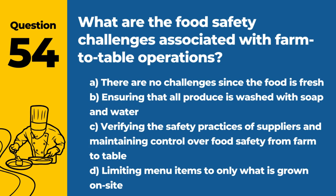Question 54. What are the food safety challenges associated with farm-to-table operations? The answer is C: Verifying the safety practices of suppliers and maintaining control over food safety from farm to table. Farm-to-table operations must carefully manage the supply chain to ensure food safety.